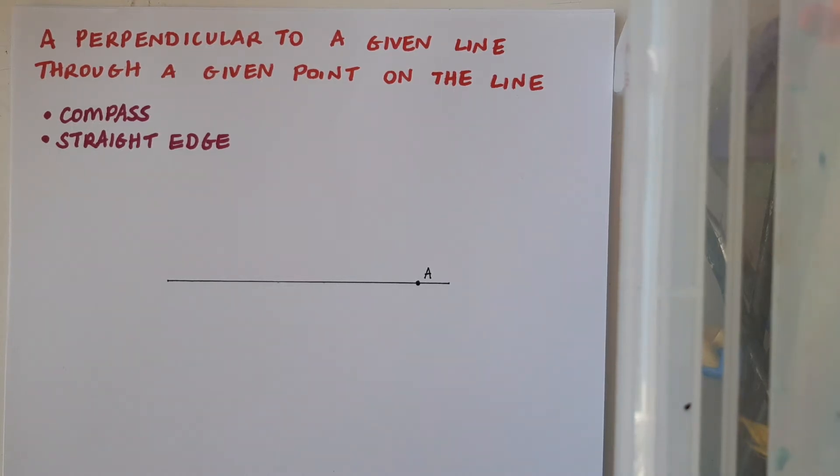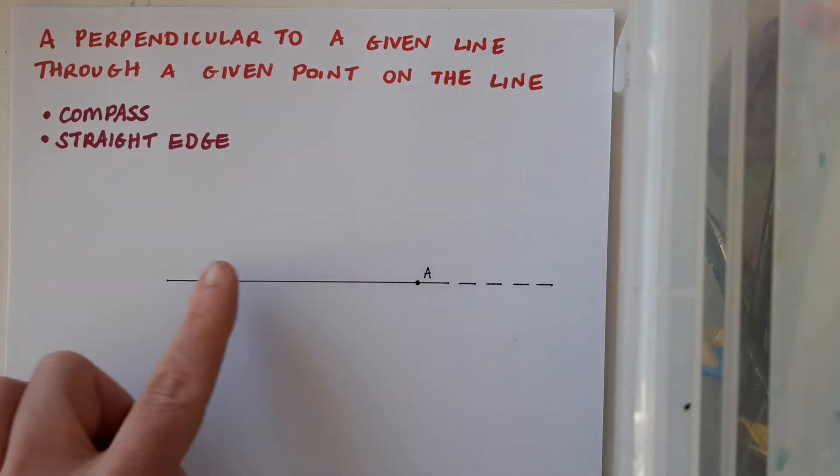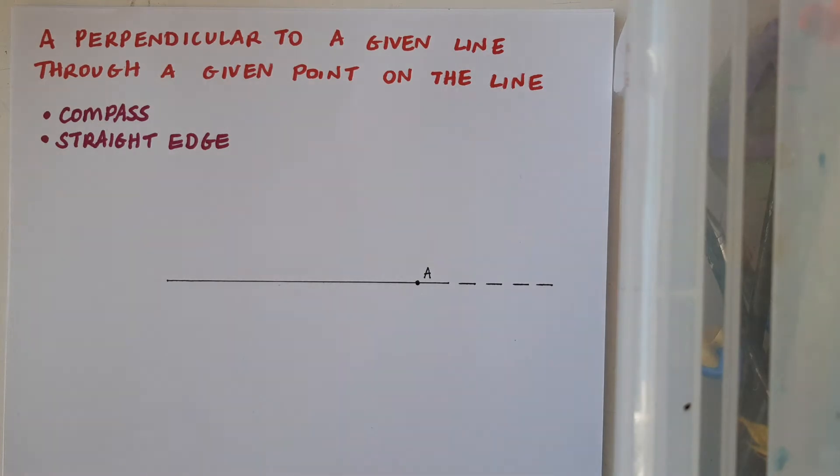But I'm going to get around that by first of all if necessary extending the line. In this case A is quite close to the end so I'm going to extend the line slightly to the right, and then I'm going to chop off part of this line so that A is right in the middle of the section that I chop out.